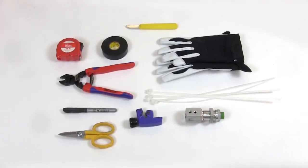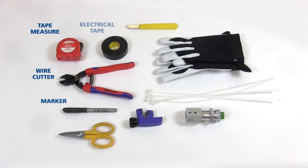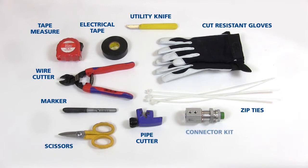The tools required for this procedure include a tape measure, a wire cutter, a marker, electrical tape, gloves, zip ties, and a pipe cutter. If using an AFL enclosure, you will also need a connector kit.